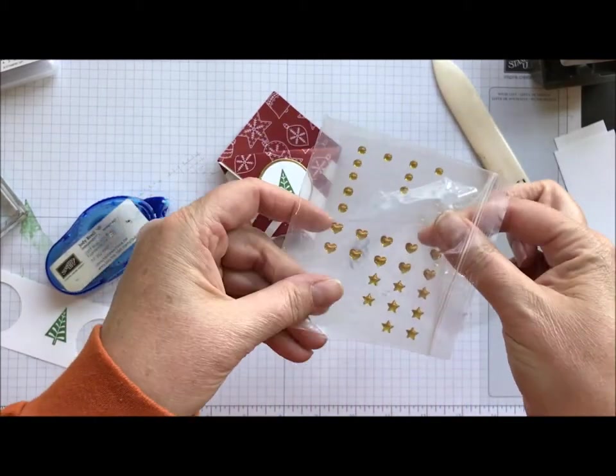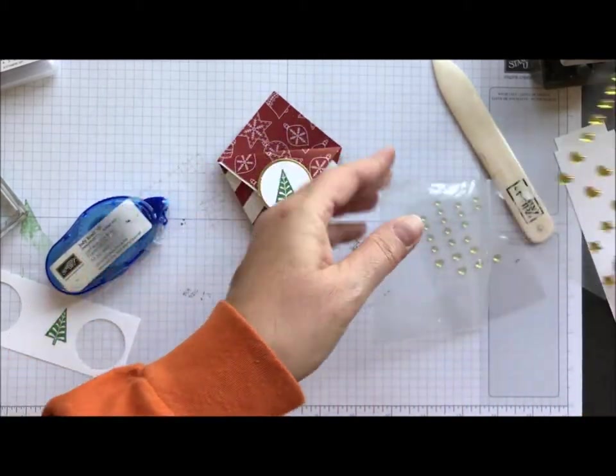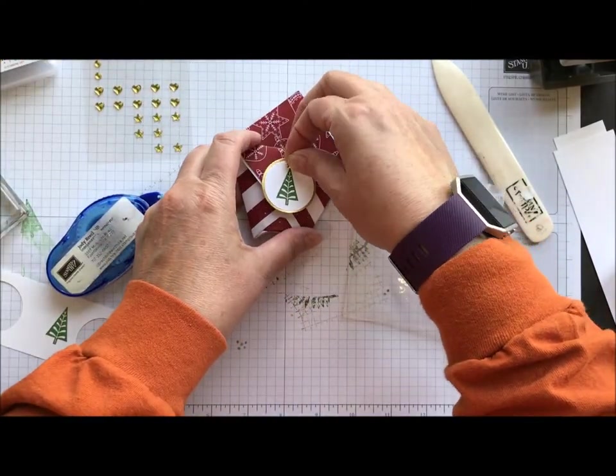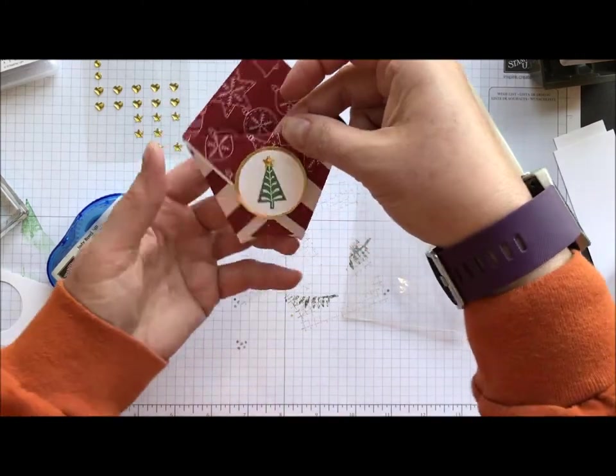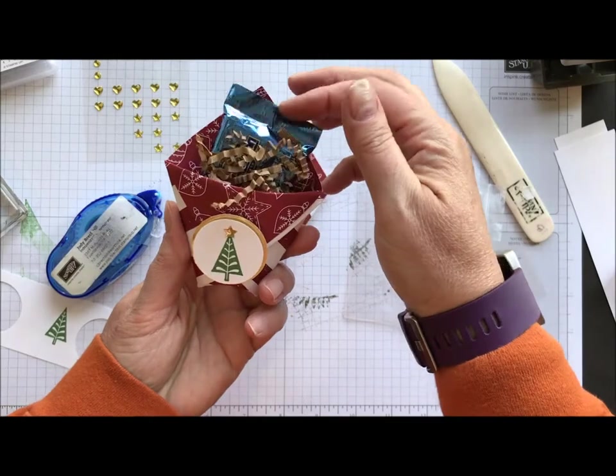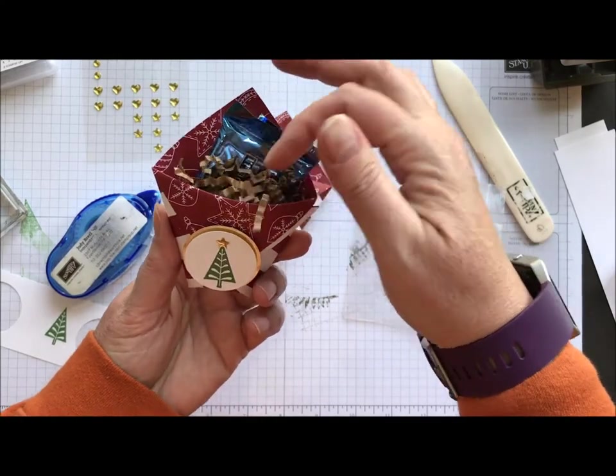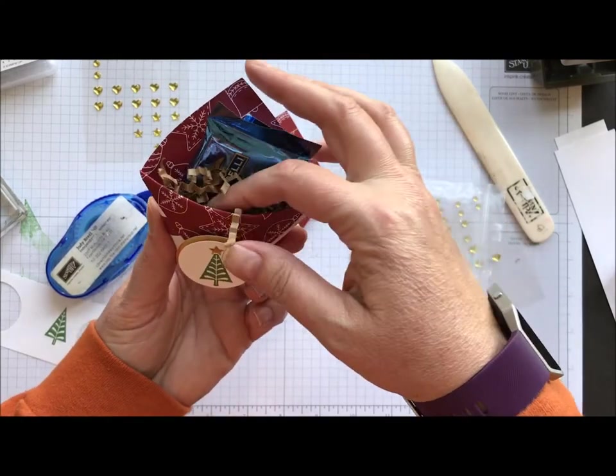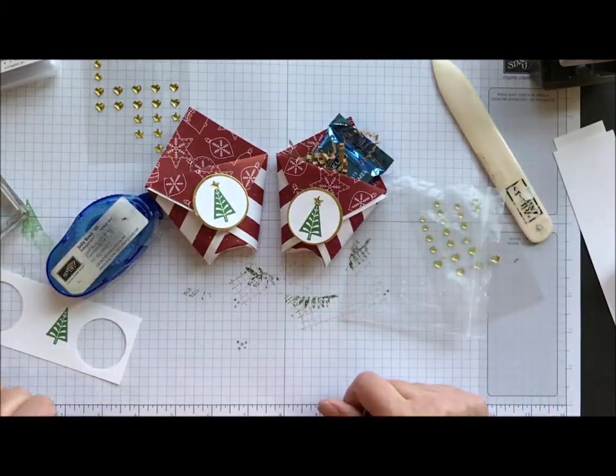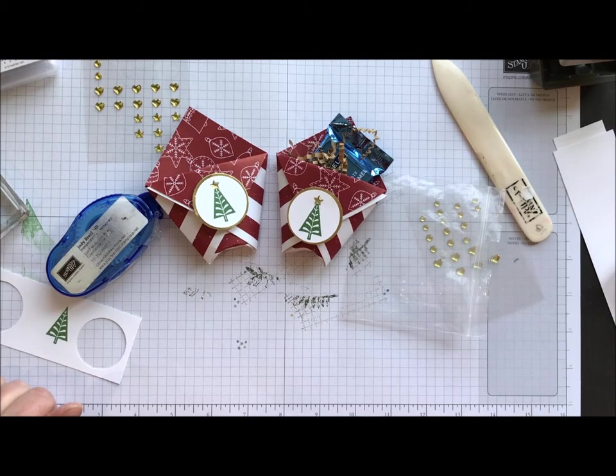And now I have some of our metallic enamel shapes, and I'm just going to take a little star and put that right at the top of our Christmas tree. So is that not adorable or what? So a little Ghirardelli fits right in there. You could do anything in there. Little starlight mints would be cute, all kinds of fun stuff. So there is a super quick and simple diaper fold pouch.